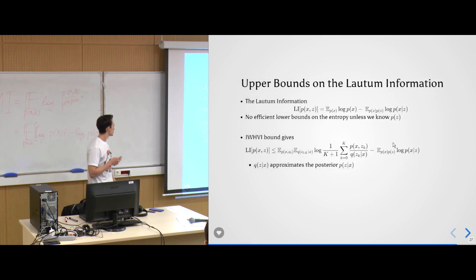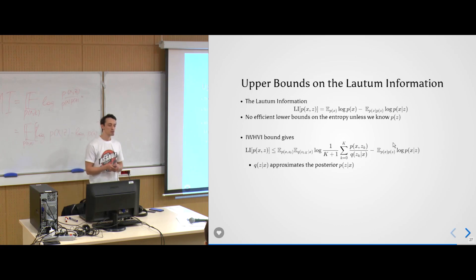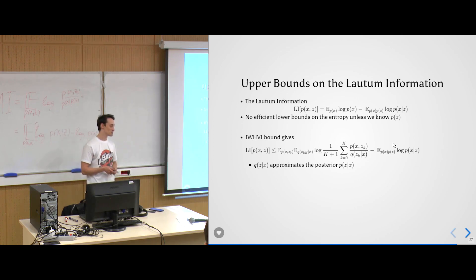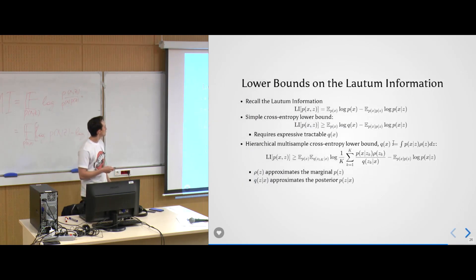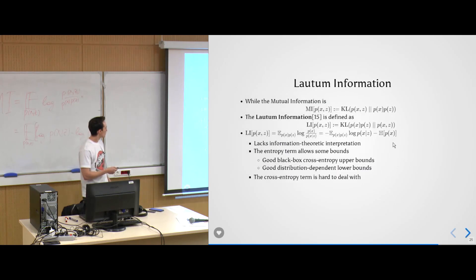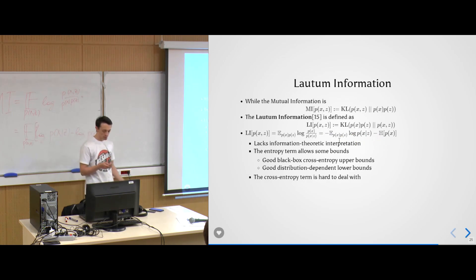That's it for the lautum information. It hasn't had many practical applications — there's one paper introducing it and one actually trying to use it. It's not clear how practically useful it is or what the first term actually does, but at least it's one way to measure dependence between two random variables.